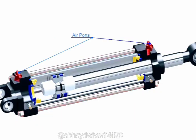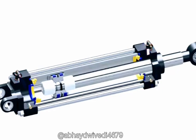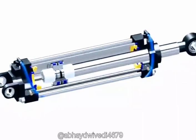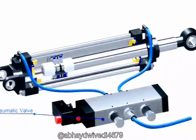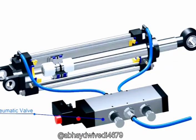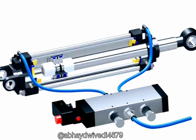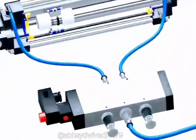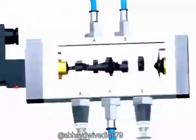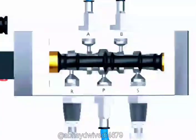Air ports are screwed to the ends, through which compressed gas flows in and out. A pneumatic valve is connected to these air ports using pneumatic hoses. The valve shown here is a five-port, four-way valve.